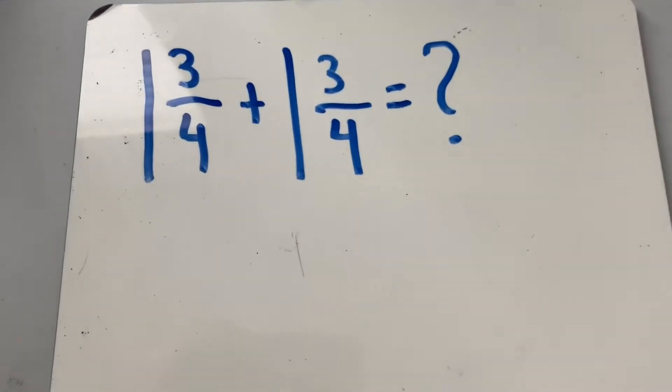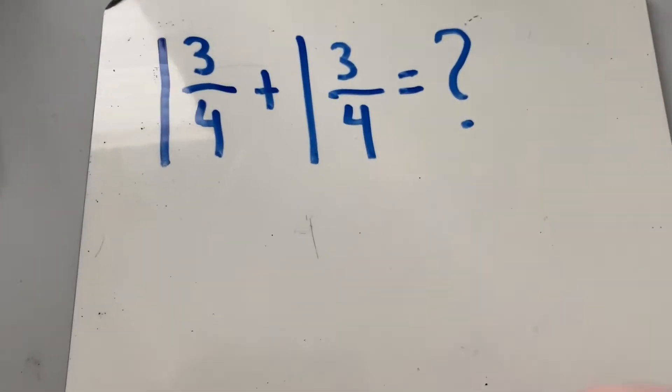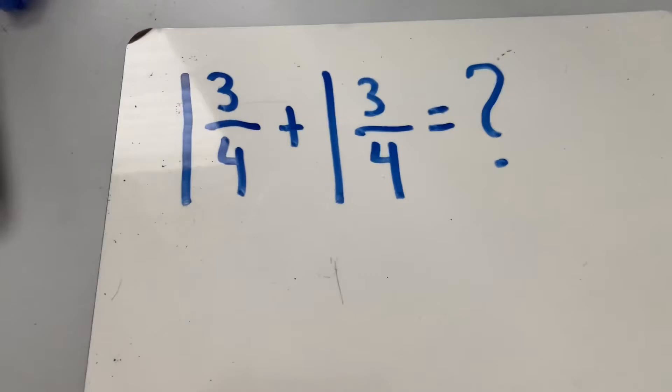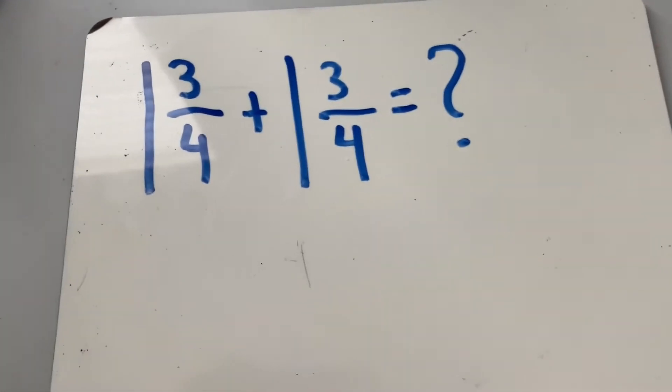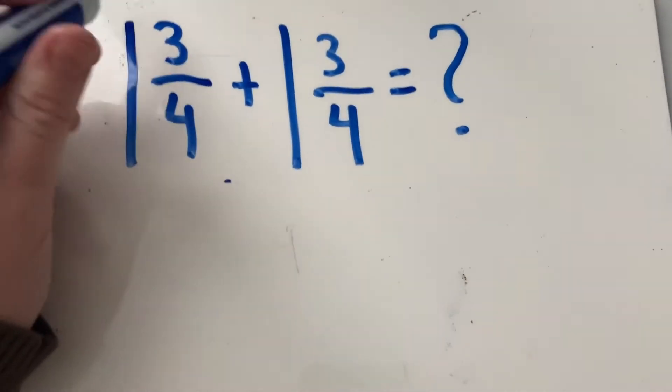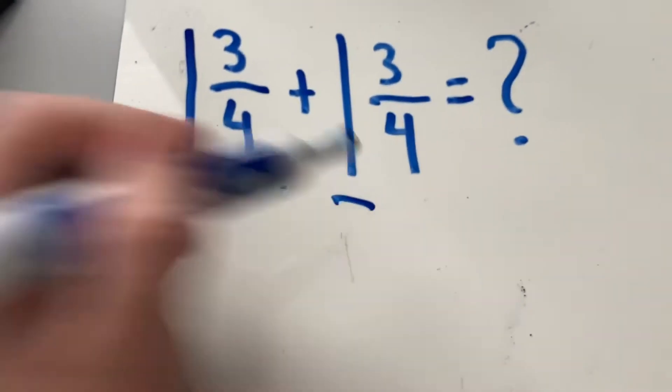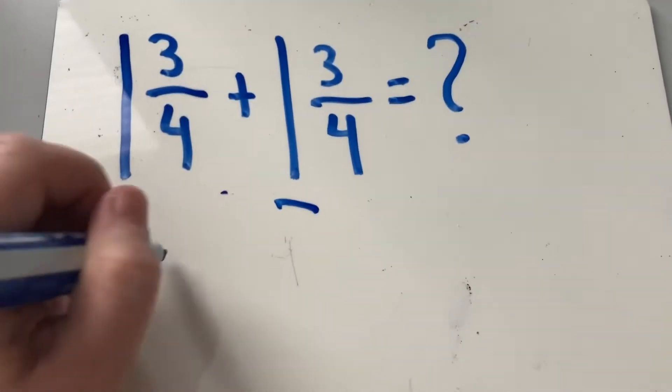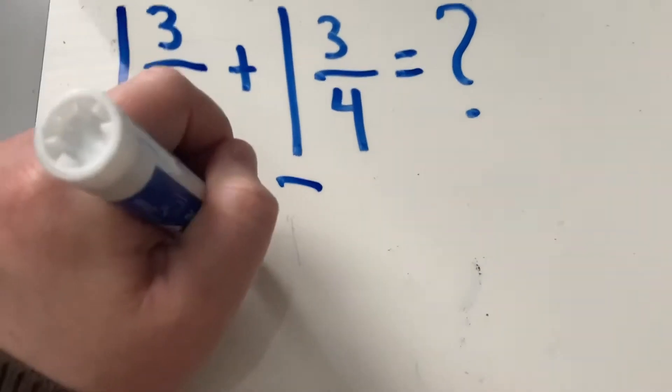So what we're trying to solve is one and three-fourths plus one and three-fourths. To figure this out, the first thing I need to add together are my wholes. So to add my wholes, I see one whole plus one whole. One plus one is two. So I at least know that I'm using two cups of flour.